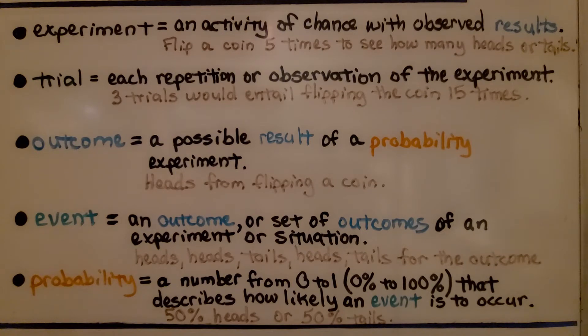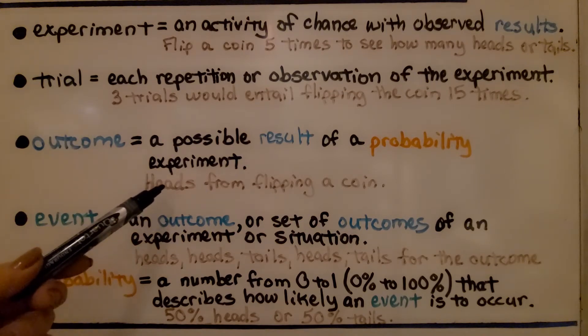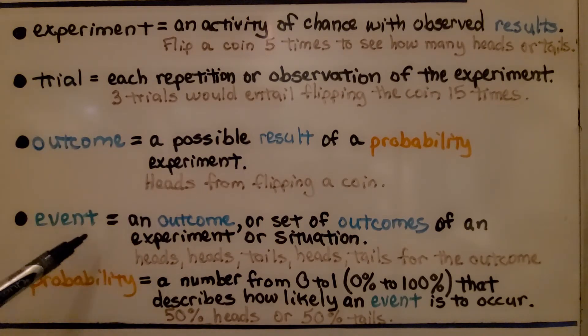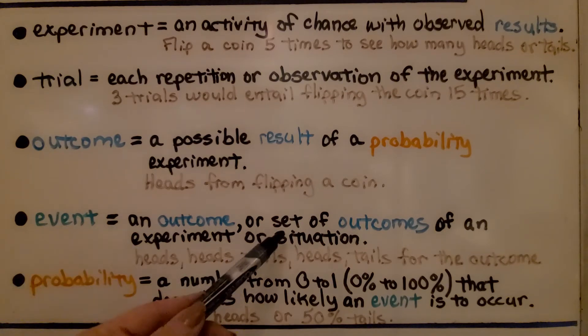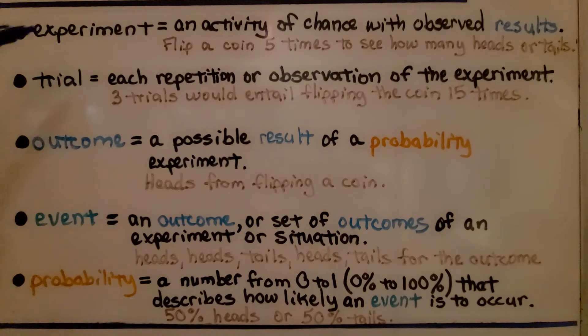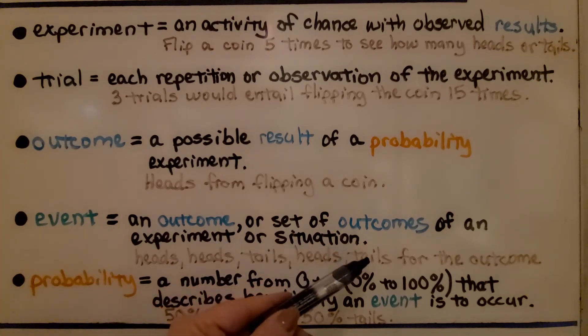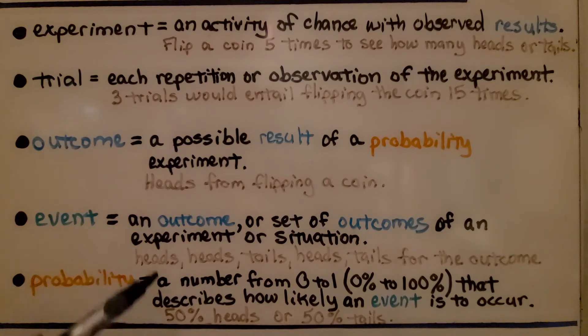An outcome is a possible result of a probability experiment, like heads from flipping the coin one time. An event is an outcome or set of outcomes of an experiment or situation. For this experiment, the event would be heads, heads, tails, heads, tails if when we flipped it five times, this is what we got.